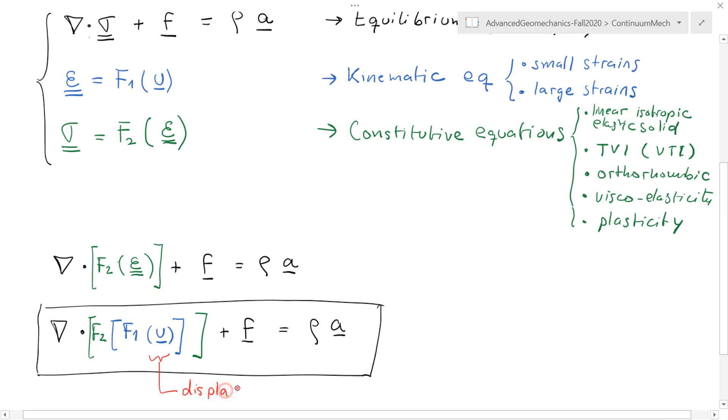If we use a discrete solution for this equation or we use an analytical solution, we're going to be solving for displacement. For those of you which are more familiar with, for example, fluid flow equations, when you solve for fluid flow equations you solve for pressure—that's a variable that you're trying to solve everywhere in your domain. In our case, we're going to solve for displacement.